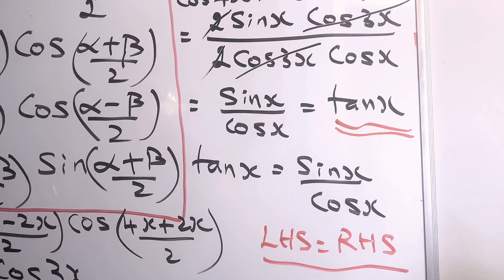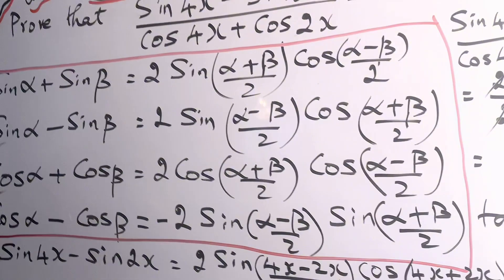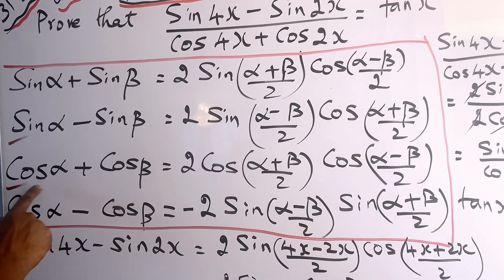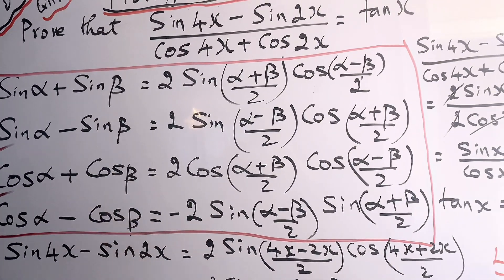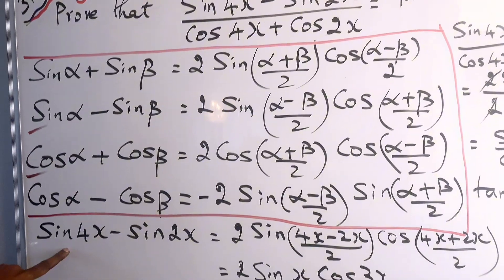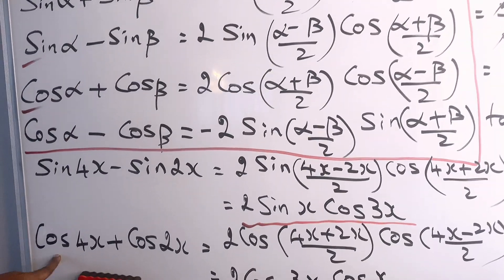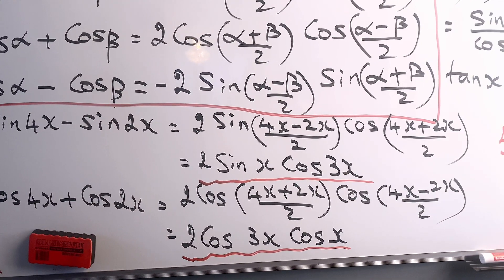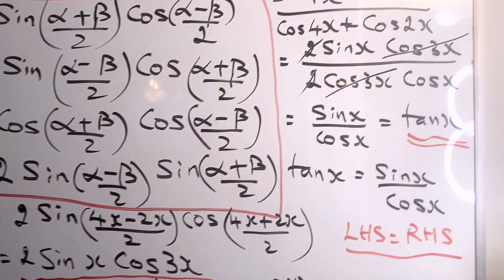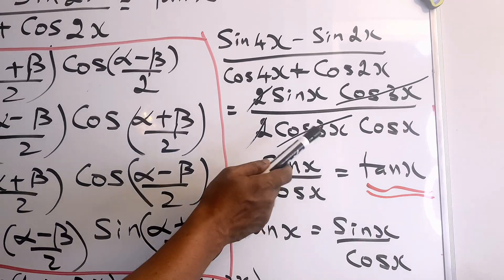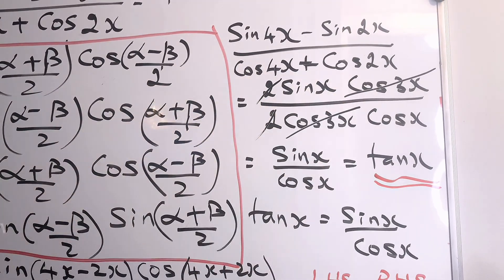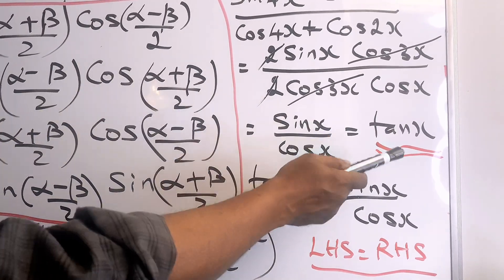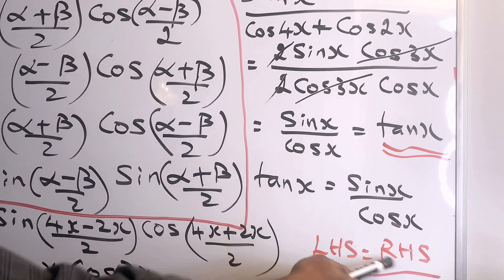To summarize: there are four sum-to-product formulas — sin α plus sin β, sin α minus sin β, cos α plus cos β, and cos α minus cos β. I applied the second formula to the numerator and the third formula to the denominator, obtaining 2 sin x cos 3x over 2 cos 3x cos x. After cancellation, we get sin x over cos x, which is tan x. So we have proved the left-hand side equals the right-hand side.